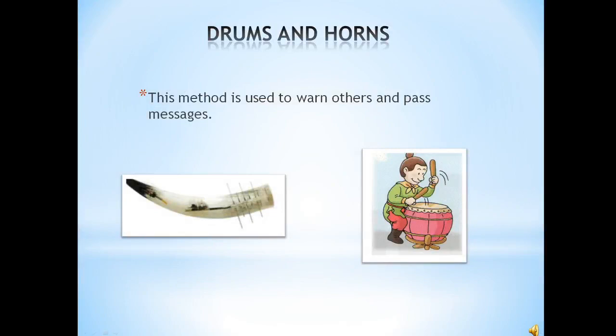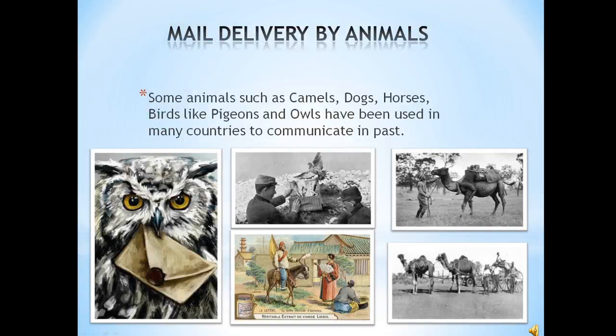Drums and horns were used to warn others and pass messages. Mail delivery by animals — some animals such as camels, dogs, horses and birds like pigeons and owls have been used in many countries to communicate in the past.